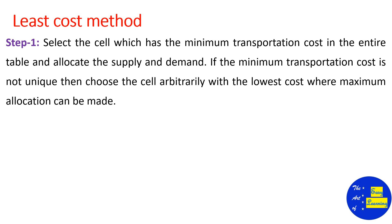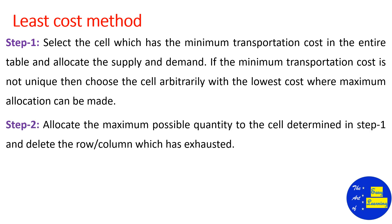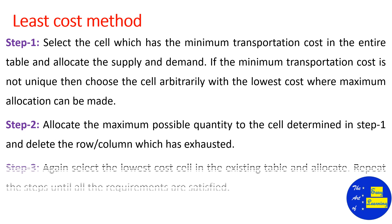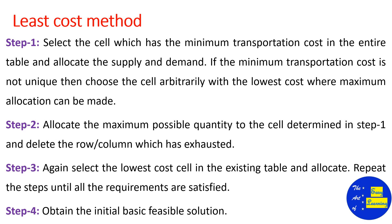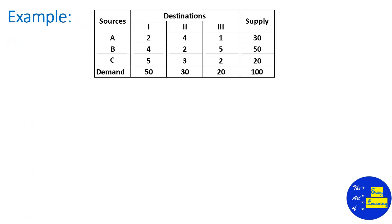Allocate the maximum possible quantity. If there is a tie with the least cost value, then choose the cell arbitrarily and allocate the maximum possible quantity. If the requirements are satisfied, move the corresponding row or column and reduce the table. Again choose the least cost cell and allocate the maximum possible quantity. This process continues until all the requirements are satisfied.